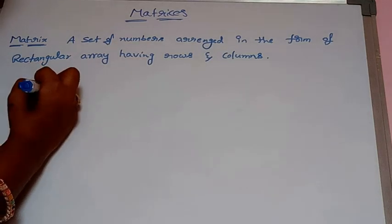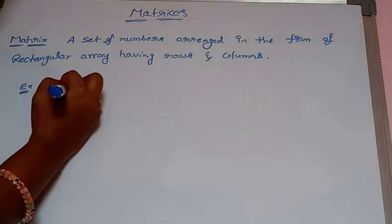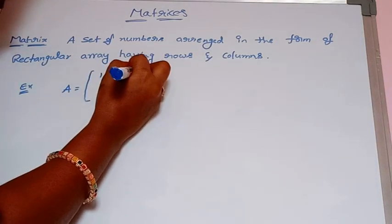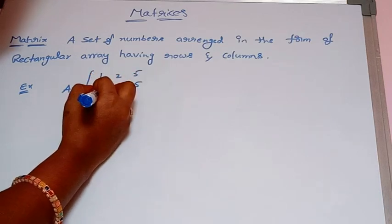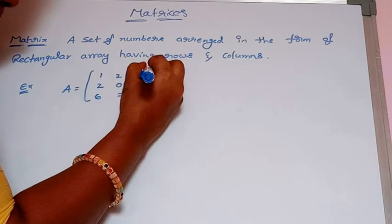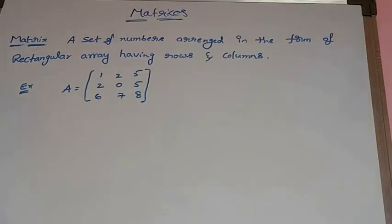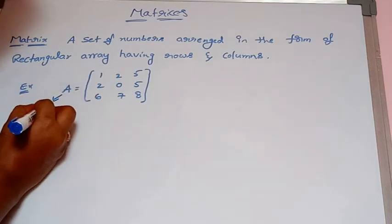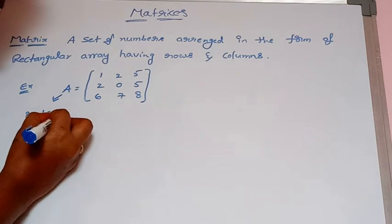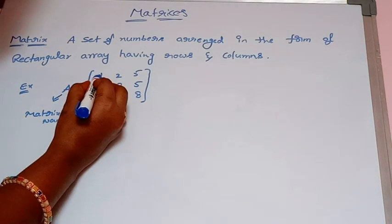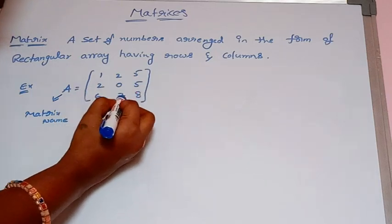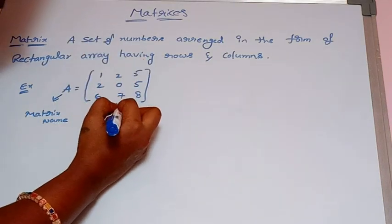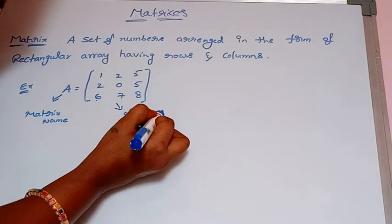Let us see one example. Here A is the matrix, where A represents the matrix name, and 1, 2, 5, 2, 0, 5, 6, 7, 8 are the numbers inside. These numbers are called elements.